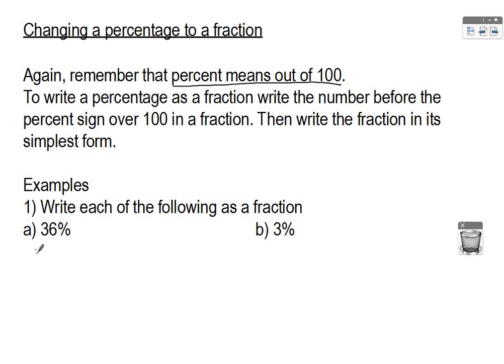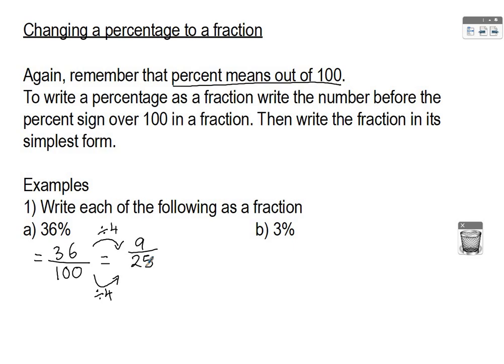For 36%, wanting to write that as a fraction: that is 36 out of 100 — that's what percent means — and then we try to simplify. What number goes into both 36 and 100? You might think 2, but also 4. So we divide both numerator and denominator by the highest common factor, which is 4, giving us 9 over 25. Check that no other factors go into 9 and 25 — none do — so it's in its simplest form.